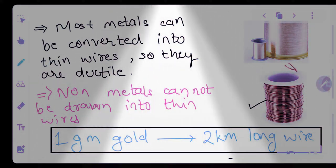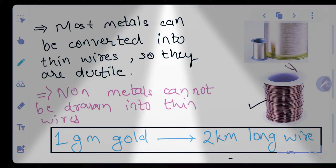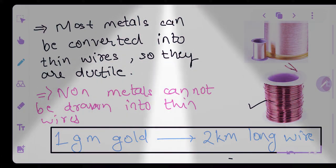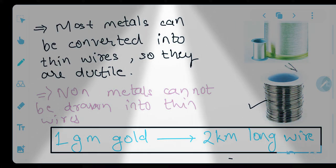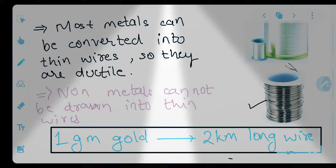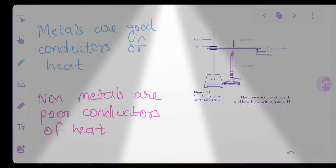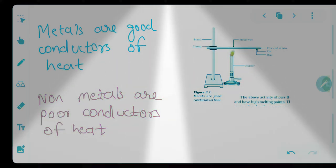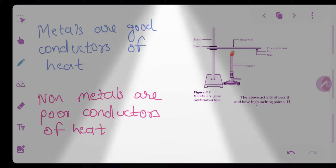Students, you will be shocked to know that if you take one gram of gold and hammer it, you can convert it into a two-kilometer-long wire without any breakage! So that is why metals are called ductile. Gold is both the most malleable and the most ductile metal.